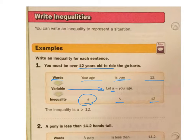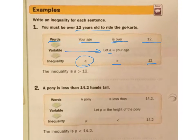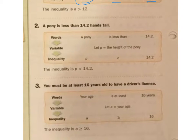Number two here. A pony is less than 14.2 hands tall. Okay, so if we're talking about words, we have a pony is less than 14.2. Now we put P as a variable, the height of the pony. So the P, height of the pony, has to be less than 14.2. So the inequality is P is less than 14.2.